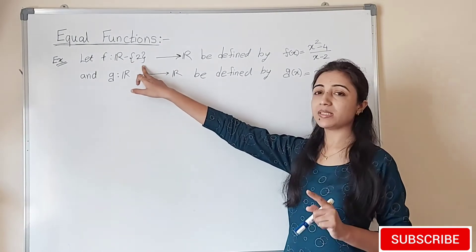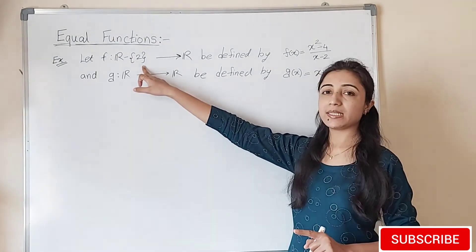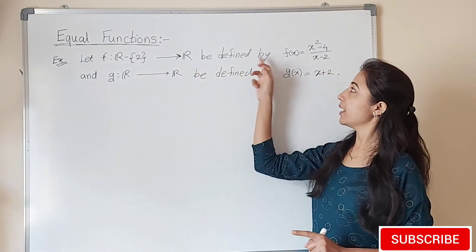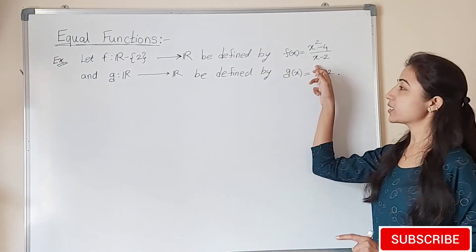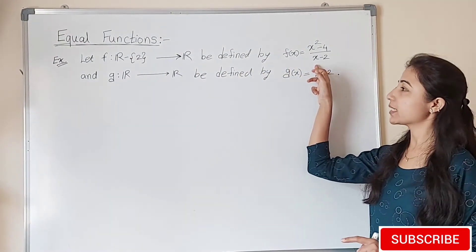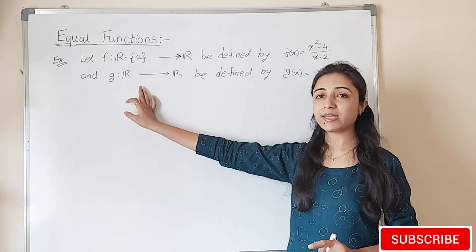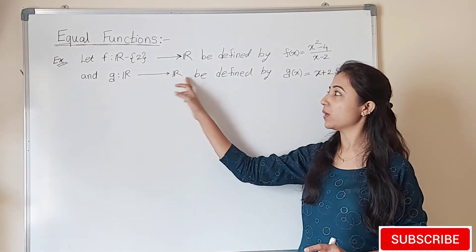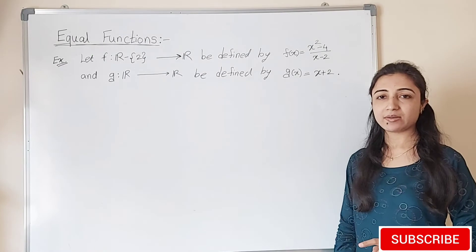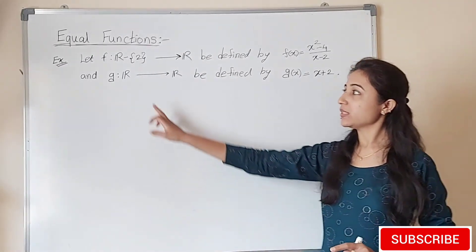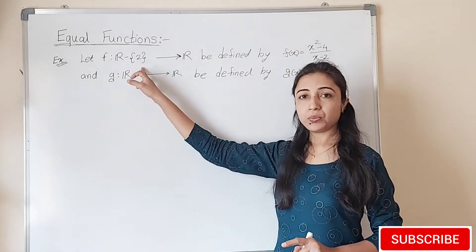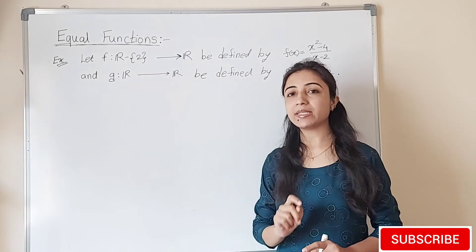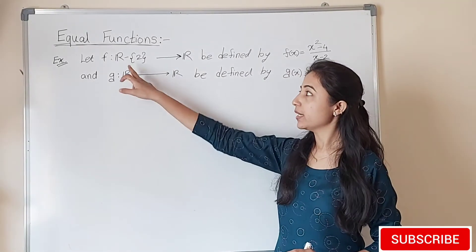See the next interesting example. Here we have given a function mapping from set of R minus singleton set {2} to R defined by f(x) equals x squared minus 4 divided by x minus 2. And g(x) is a mapping from set of R to R defined by g(x) equals x plus 2.